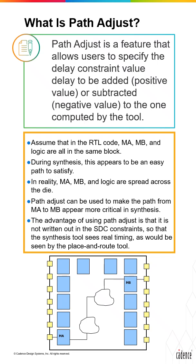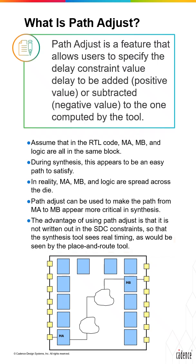During synthesis, you can use path adjust to make the path from MA to MB appear more critical in synthesis, and hence Genus focuses more optimization resources on this priority path. The advantage of having this path adjust is that it is not written out in SDC constraints, so the place and route tools see the real timing.